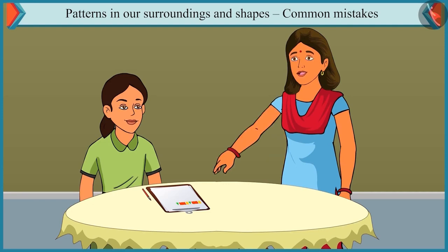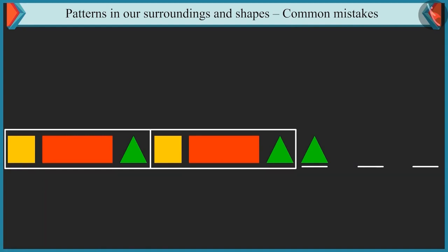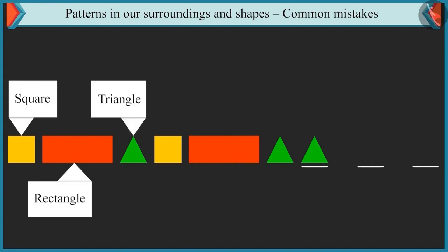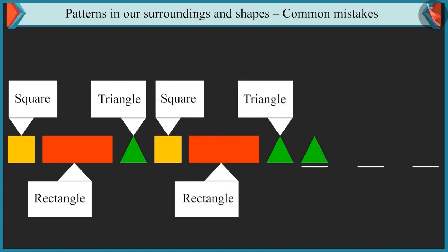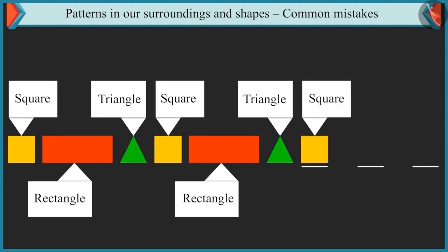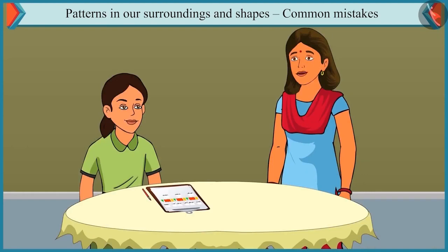Chutki, you have to identify this pattern and build it further. The triangle will be the next in this pattern. Come on, Chutki, you have to look carefully at the pattern and understand it no matter how many shapes or colours are used. Look — the square, rectangle, and triangle, these three shapes are repeated in one order in this pattern. First shape is square, second is rectangle, and third is triangle. If we repeat these shapes, then after triangle comes square, after square comes rectangle, and after rectangle comes triangle. This pattern is complete. Well done, Chutki.